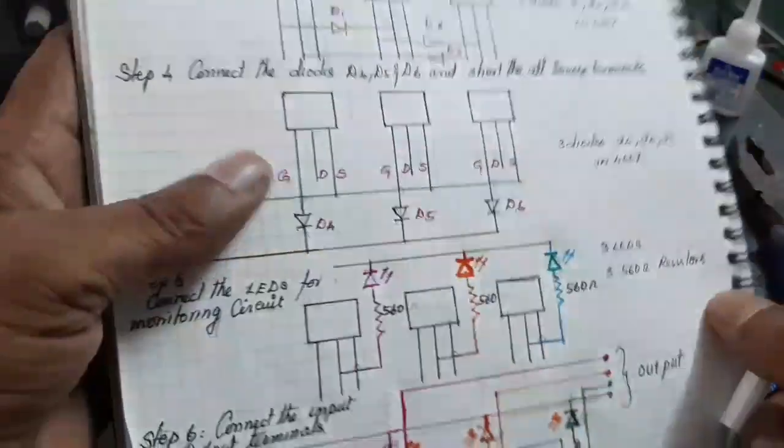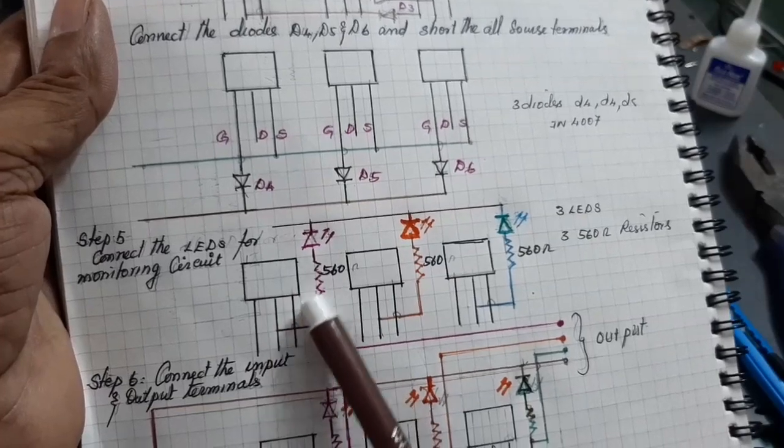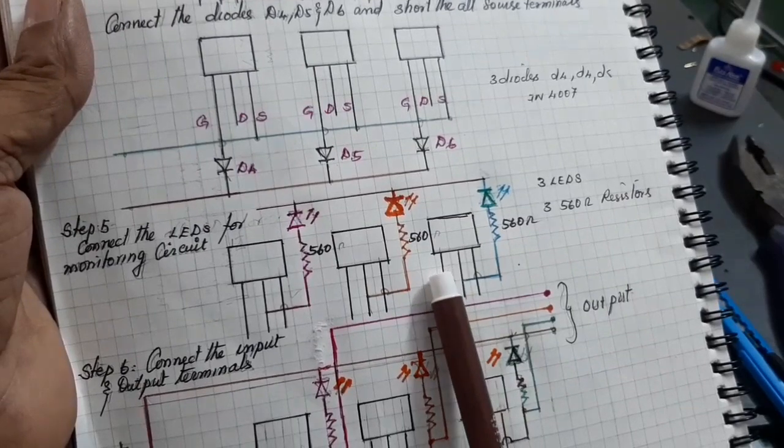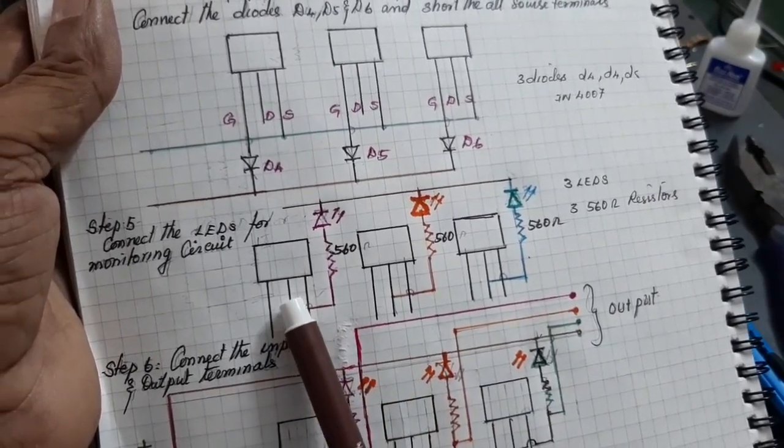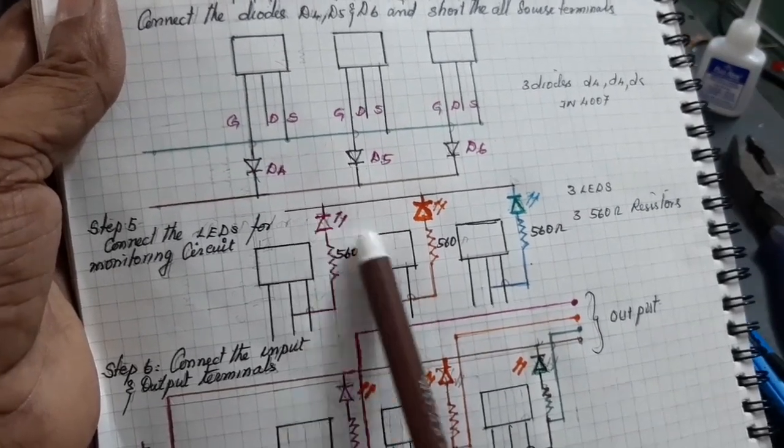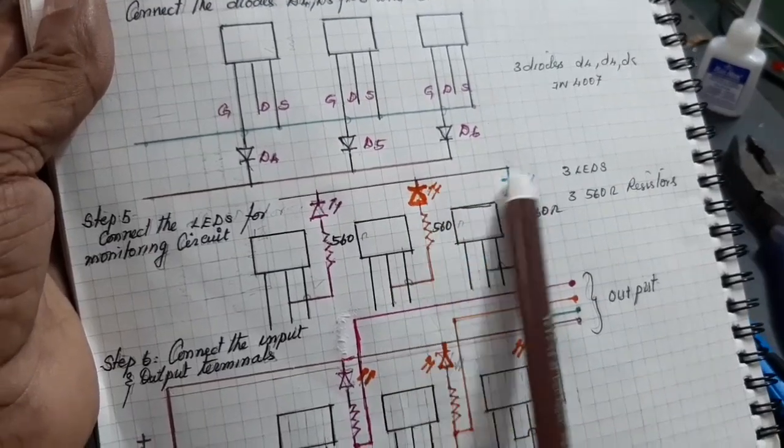Here, the 5th step. Now, here it is used for the monitoring circuit, 3 LEDs. Connected from the drain of the MOSFET. Here, 560 ohm and connected with the LED. These are the 3-phase monitoring.